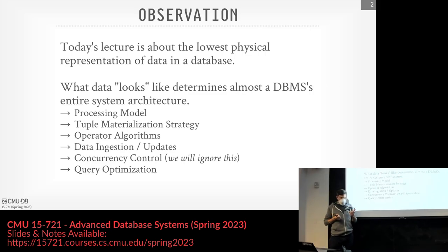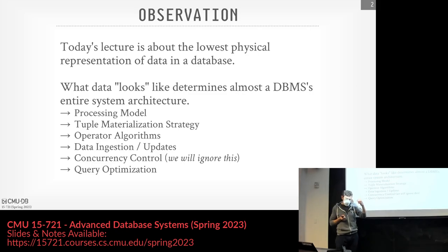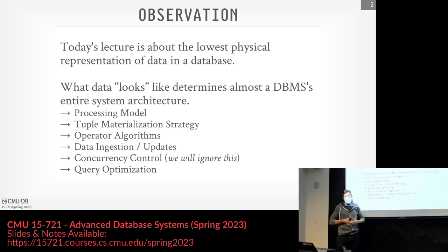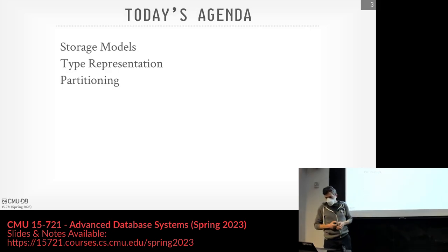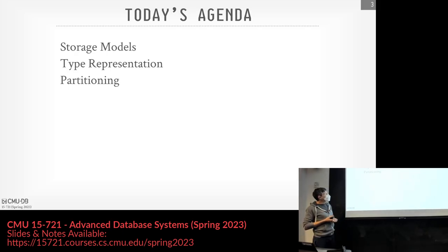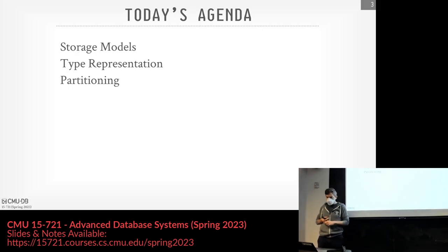Sometimes a solution to a hard problem — like fixed-length versus variable-length data — is what we'll cover next class or next week. The solution is dictionary compression, which we cover next week. Today we'll focus mostly on the storage model: row store versus column store versus the hybrid store. Then we'll talk about how we represent individual types, and briefly cover partitioning.